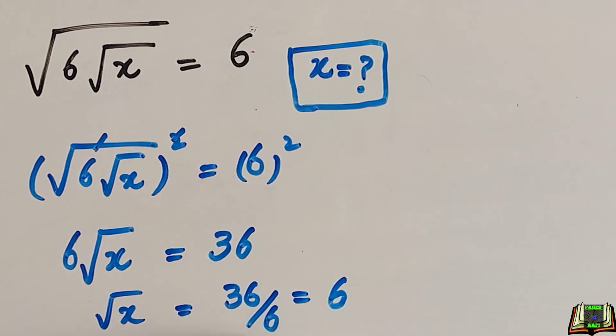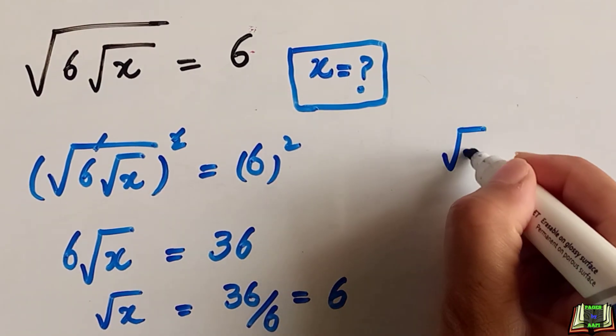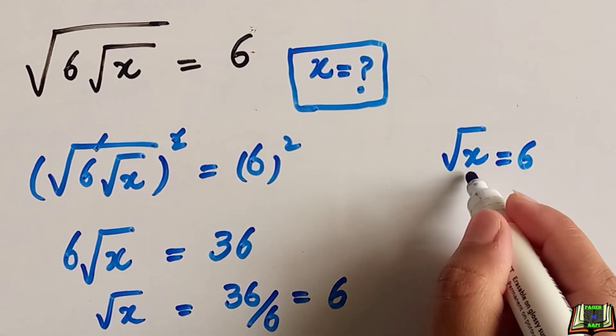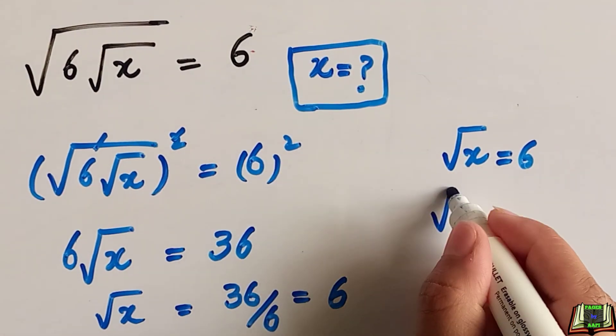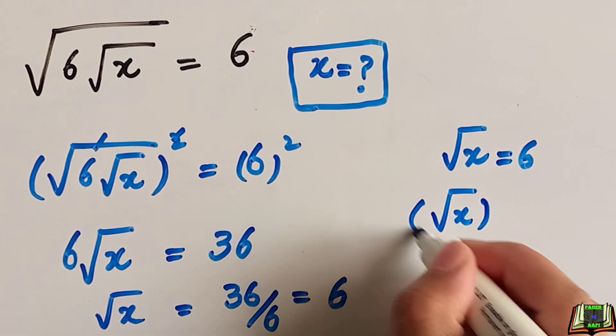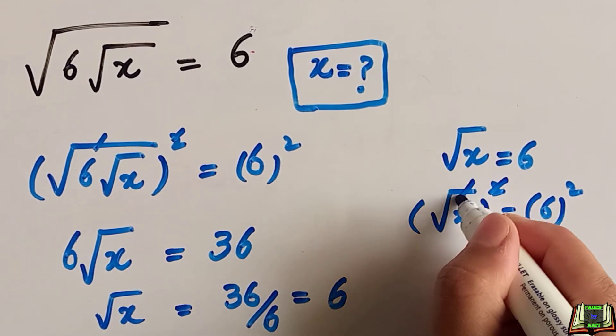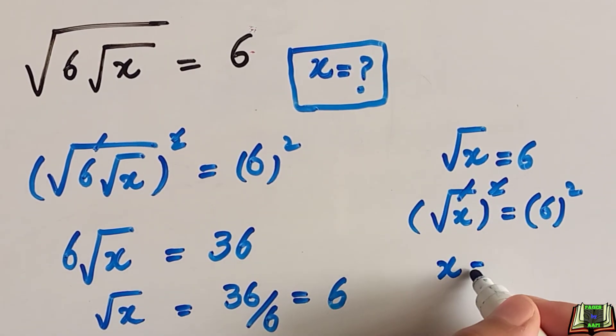Now we have square root of x is equal to 6, but we have to find the value of x in this question. So what we will do is take the square of this equation again on both sides. So this square and root cancel out, and x is equal to 6 times 6, which is again 36.